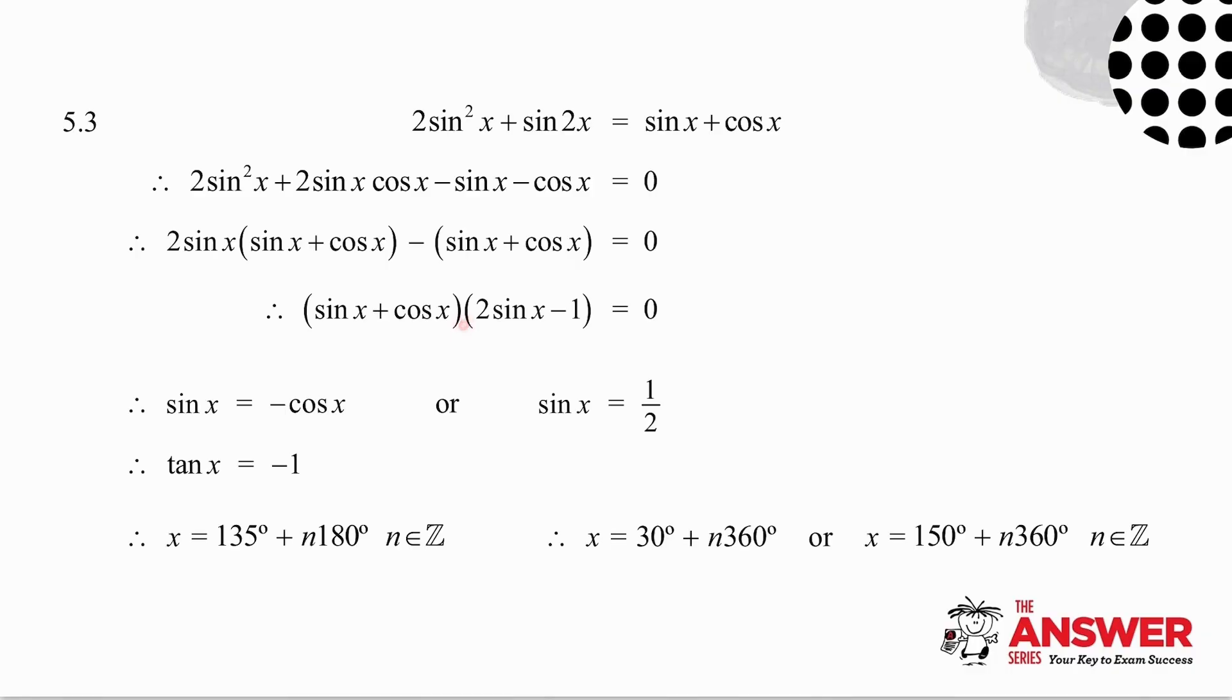Two brackets multiply to give you zero so one of them must be zero. So either sinx plus cosx is zero, which means I get that sinx is equal to minus cosx. And then remember what we do is we divide both sides by cosx. sinx over cosx is tanx and minus cosx over cosx is minus 1. If tanx is minus 1, then x is 135 degrees plus n times 180. And if you're not sure about the general solution, then you need to watch some of the trig videos to see what happens with that.